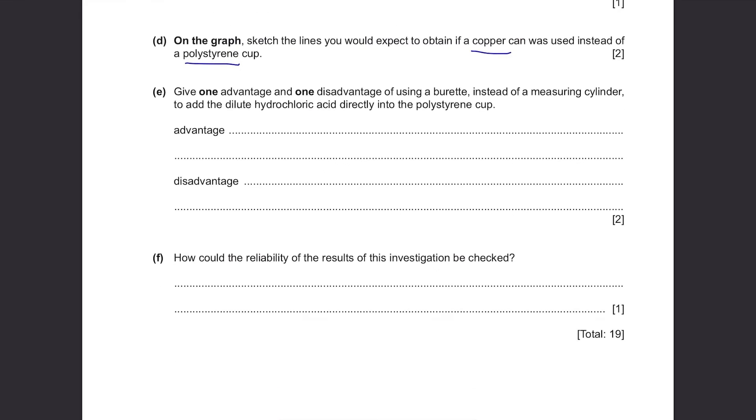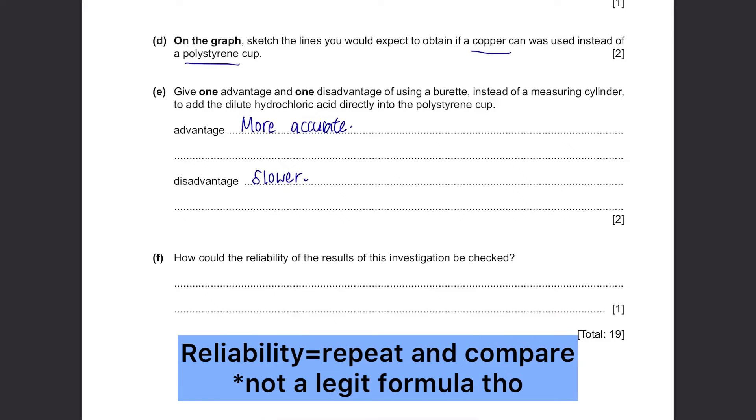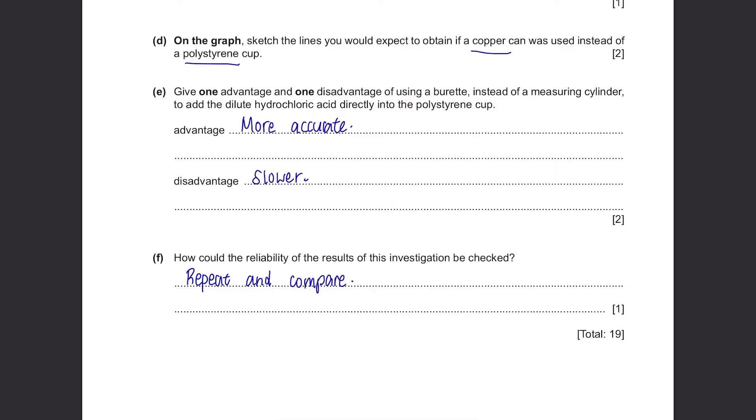Part E: Give one advantage and one disadvantage of using a burette instead of a measuring cylinder. The advantage of using a burette is that it's way more accurate, but the disadvantage is that measuring cylinder takes like 2.5 seconds to use it, but burette takes like 3 minutes, so it's much slower. Part F: How could the reliability of the results be checked? Always remember reliability equals to repeat and compare. Next time if they ask why do they have to repeat and compare the results, you write it to check the reliability.